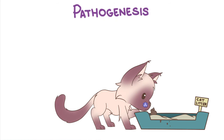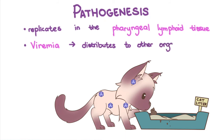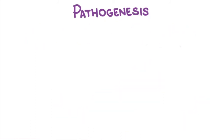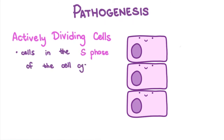Pathogenesis: After entry into the oropharynx, the feline panleukopenia virus initially replicates in the pharyngeal lymphoid tissue. Later on, viremia occurs and it distributes into the other organs. Feline panleukopenia virus, like most members of the family Parvoviridae, infects actively dividing cells — those in the S phase of the cell cycle that have the appropriate viral receptor.